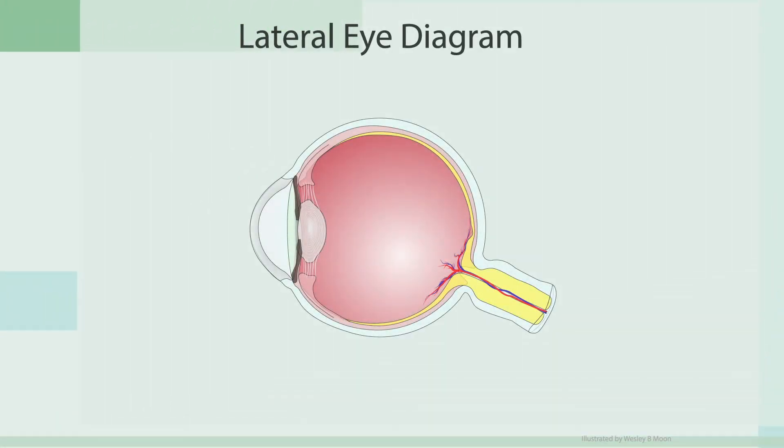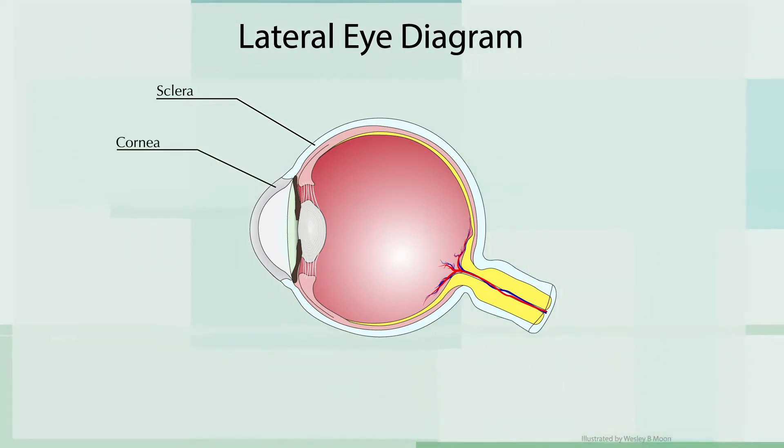To understand presbyopia, we need to understand first what parts are affected and how the eye's functional parts work together. Starting on the outside of the eye, the sclera is the outermost portion of the eye and has a white color to it. The cornea is almost an extension of this white layer but is transparent and allows light to enter the eye.